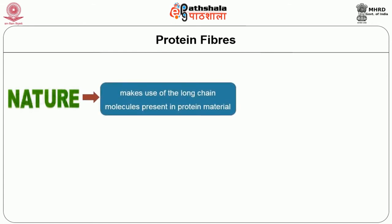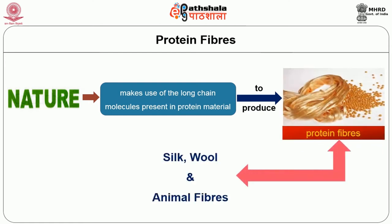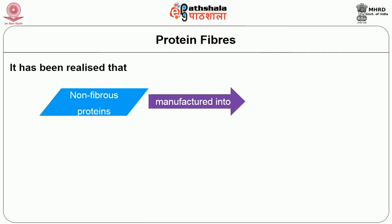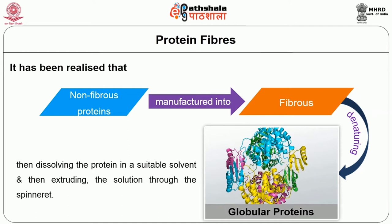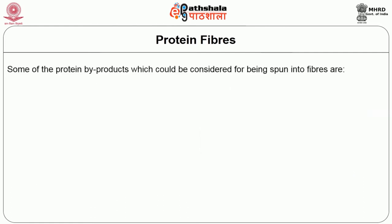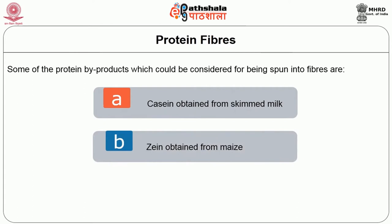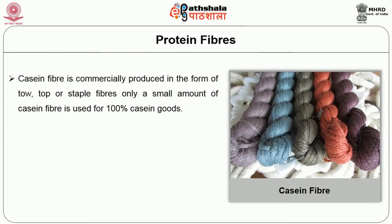Protein fibers: Nature makes use of long chain molecules present in protein materials to produce protein fibers such as silk fiber, wool fiber, and other animal fibers. It has long been realized that non-fibrous proteins could be manufactured into fibrous form by denaturing the globular proteins, then dissolving the protein in a suitable solvent, and then extruding the solution through the spinneret. Some of the protein by-products which could be considered for spinning into fibers are casein obtained from skim milk, zein obtained from maize, and arachin obtained from groundnuts. Of these, only casein fiber is commercially produced. Casein fiber is produced in the form of tow, top, or staple fibers.